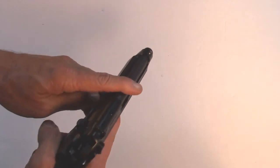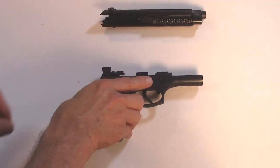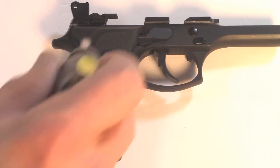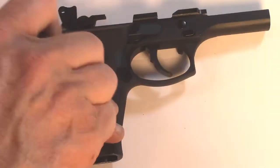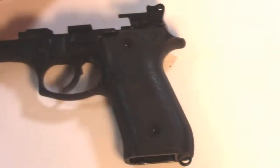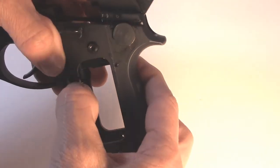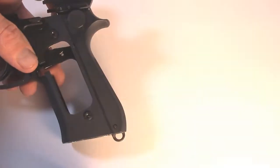Now remove the barrel slide assembly. Place that aside. Now remove the grips. You can push out the magazine release from the opposite side of the button side.